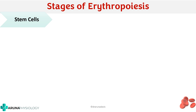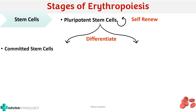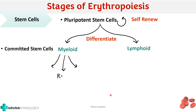The stem cells of erythropoiesis are the pluripotent stem cells — the stem cells for all cells present in the blood. The important characteristic of pluripotent stem cells is the ability of self-renewal, meaning they can divide and produce more pluripotent stem cells. They also have the property of differentiation, forming committed stem cells — the myeloid stem cell and the lymphoid stem cell. It is the myeloid stem cell that produces RBCs and all other blood cells except lymphocytes.